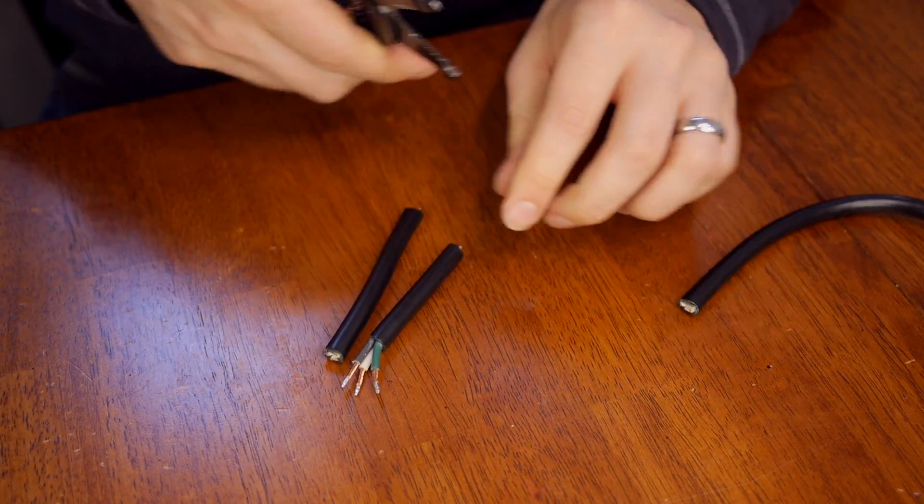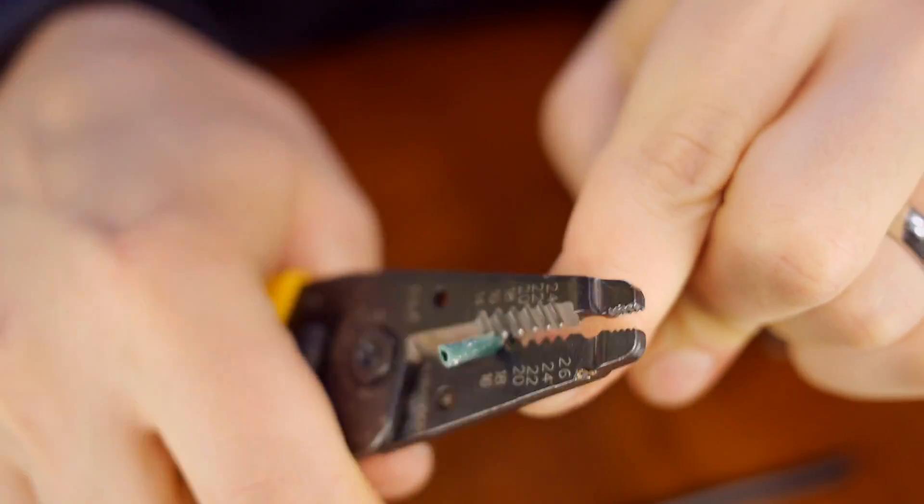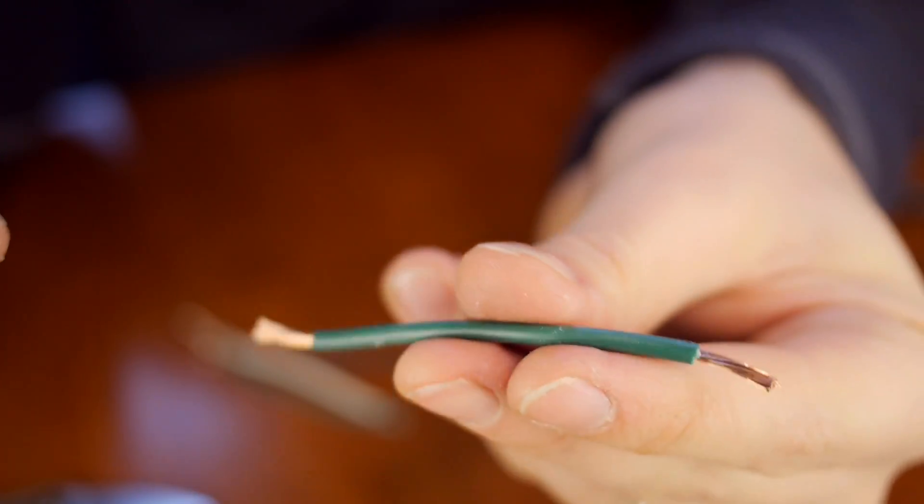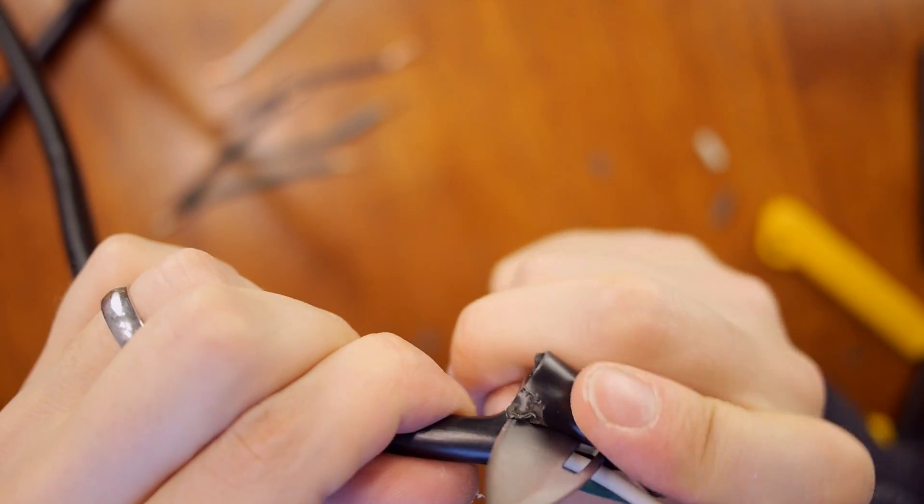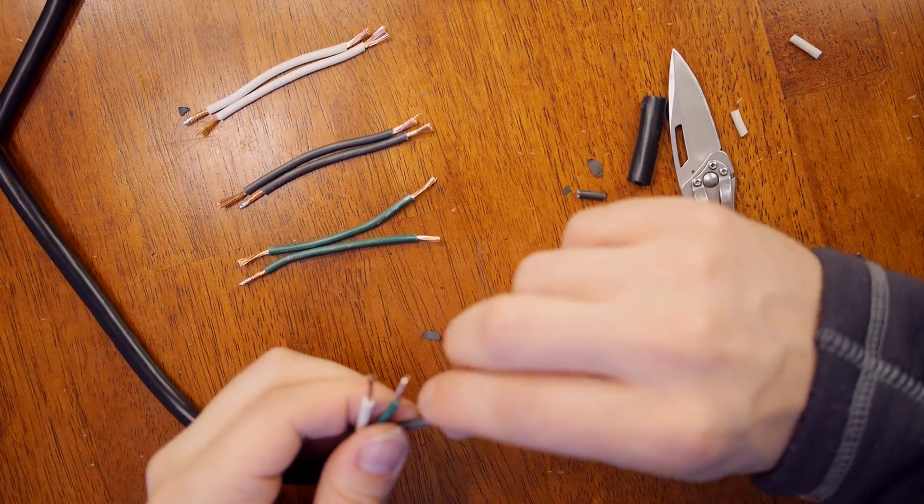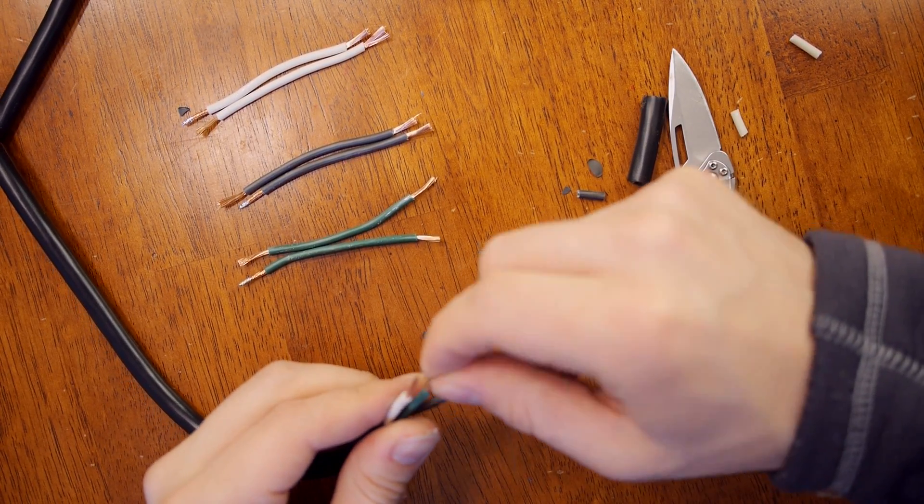I cut several short sections off the end of the cord. When removed from the housing, these short wires create the pigtails needed to connect to the outlets. I like to twist the stripped wires together to make sure they don't fray.